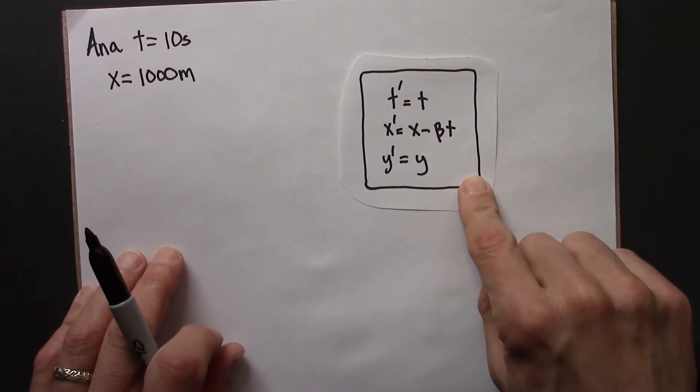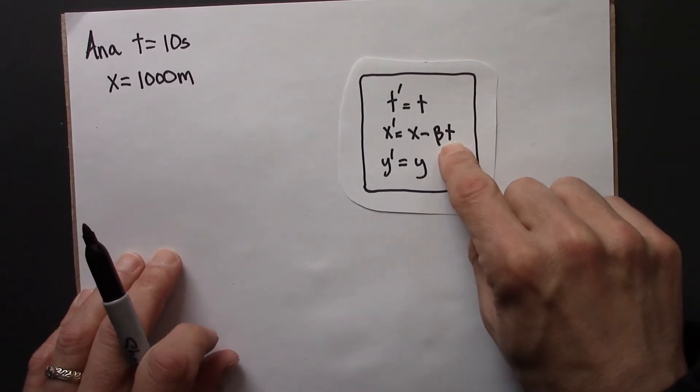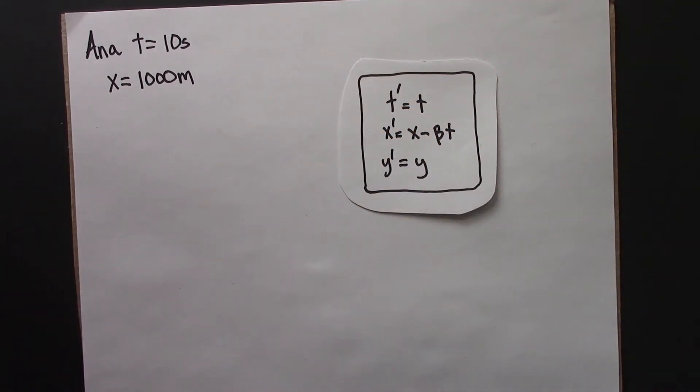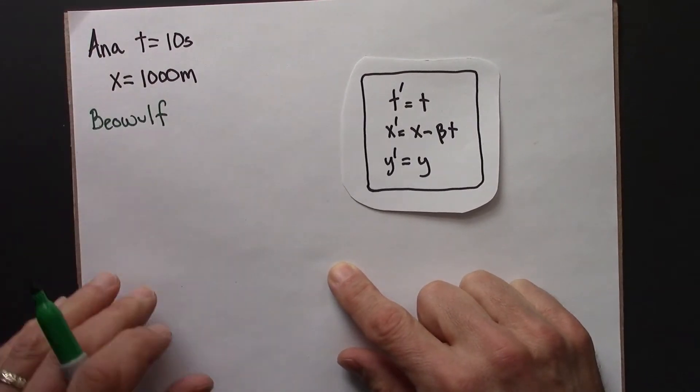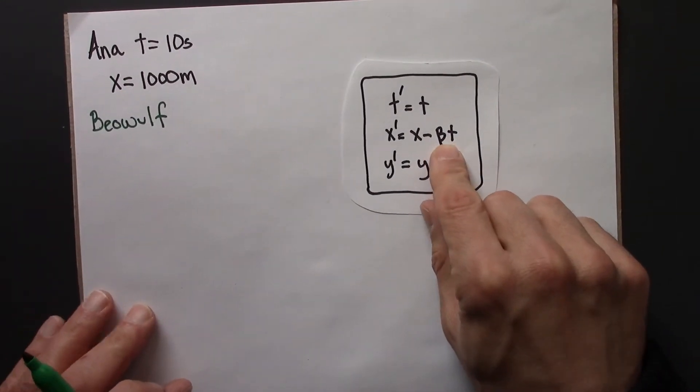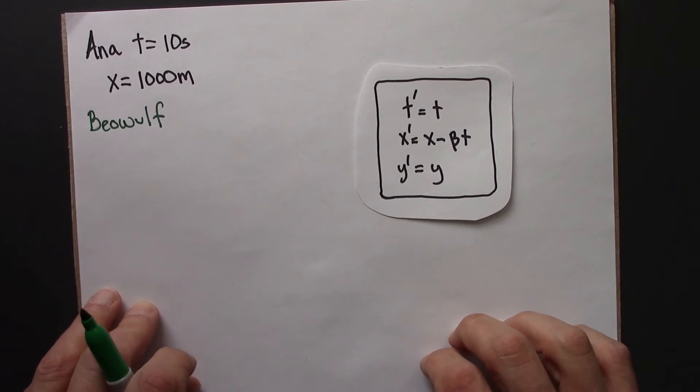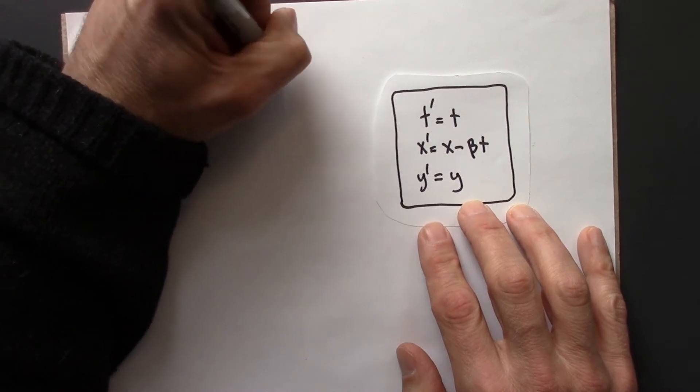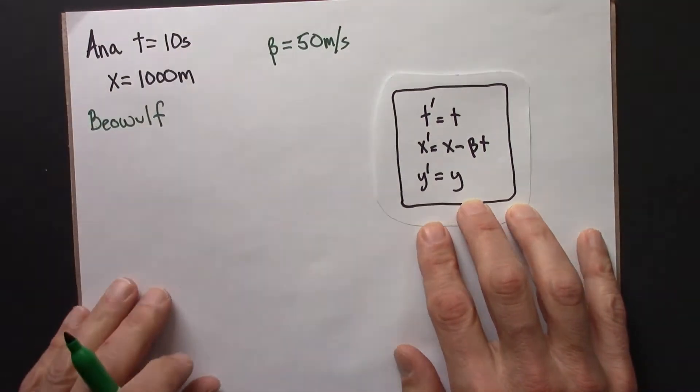Okay, let's use these equations to translate X and T into these primed versions, which would be what Beowulf sees. Maybe I'll use a different color for that. All right, so we're going to need to think about beta. Beta is the speed of Beowulf's frame relative to Anna. And that's also given in the problem, that is 50 meters per second. So I guess I'll make a note over here. Beta is 50 meters per second.